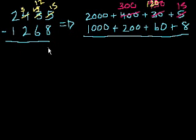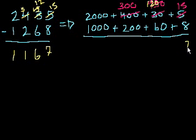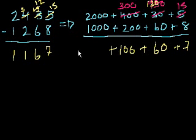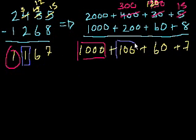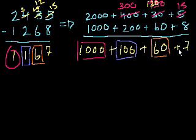Now we can subtract. 15 minus 8 is 7. 12 minus 6 is 6. 3 minus 2 is 1. 2 minus 1 is 1. Or: 15 minus 8 is 7, 120 minus 60 is 60, 300 minus 200 is 100, 2,000 minus 1,000 is 1,000. This 1 represents 1,000, this 1 represents 100 — and how do I know that? Because of its place value. This 6 represents 60, and this 7 represents 7.